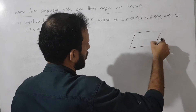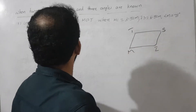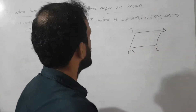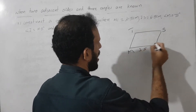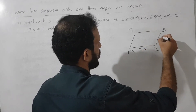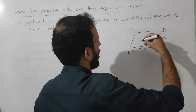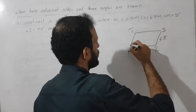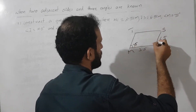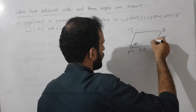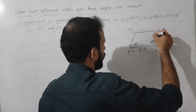It is a quadrilateral and we name it MIST. What are given: MI is equal to 3.5, IS is equal to 6.5, angle M is equal to 75°, angle I is equal to 105°, and angle S is equal to 120°.